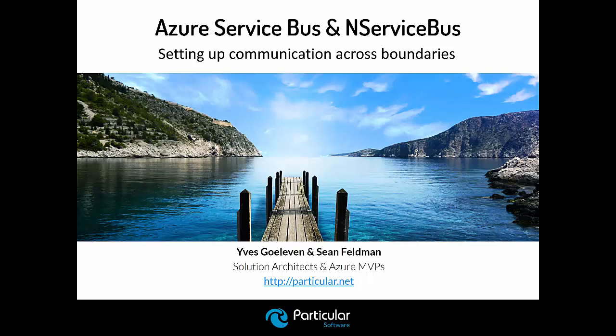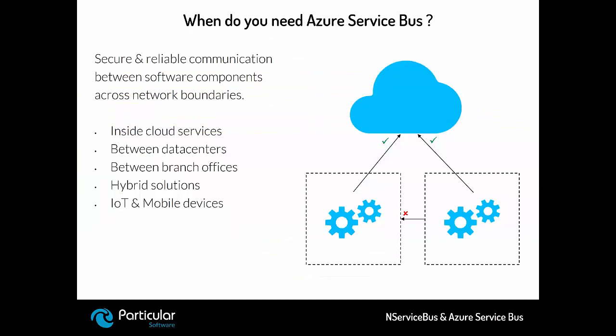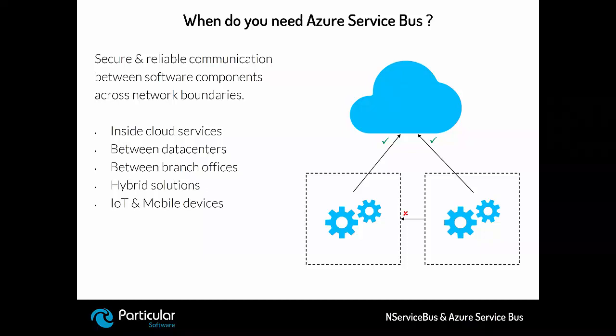Let's refresh our memory and recall why we need to use Azure Service Bus. In the previous webinar we talked about several scenarios when we need communication between our processes: inside cloud services, between different data centers, scenarios where we have hybrid solutions, internet of things and mobile applications, or just between different parts of a bigger system, for example different branch offices. Whenever we need to cross those boundaries, Azure Service Bus allows us a ubiquitous way to send messages and allow communication.